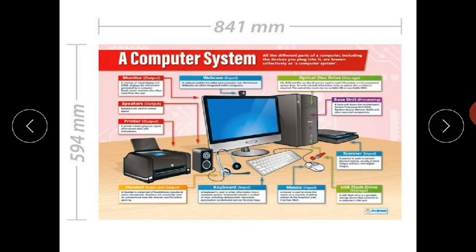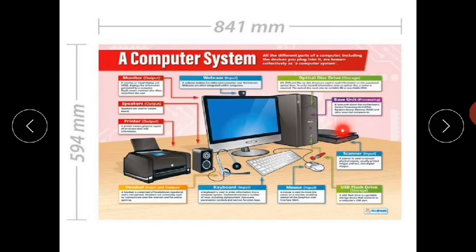Now we are coming to the next chapter: a computer system. The system of the computer is known as a computer system. The computer is not only this monitor, this keyboard, this processor — this system is made by the computer system. The computer is not a single thing, not a single device, but it is a whole system.